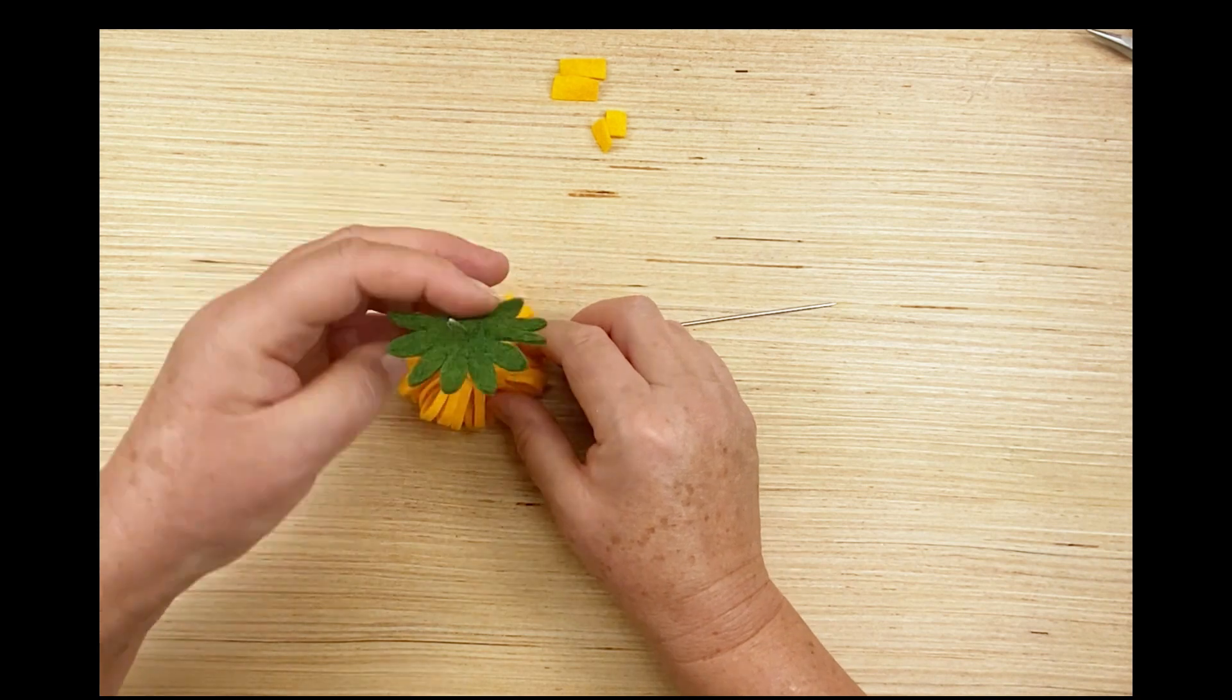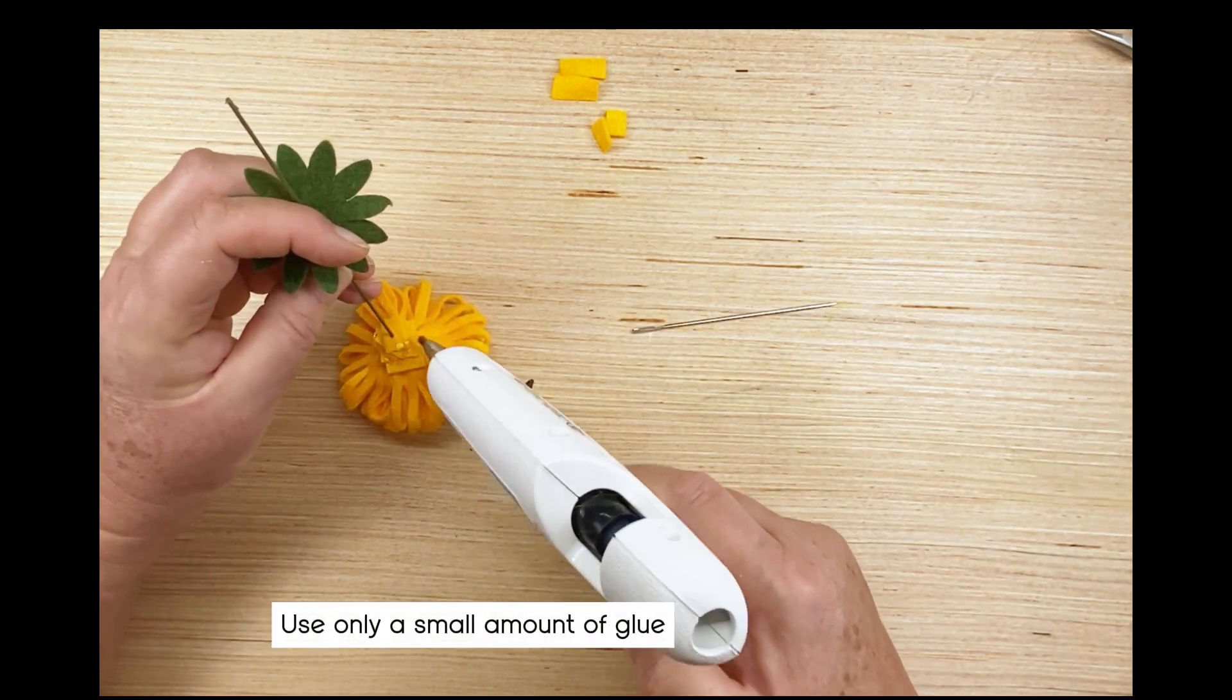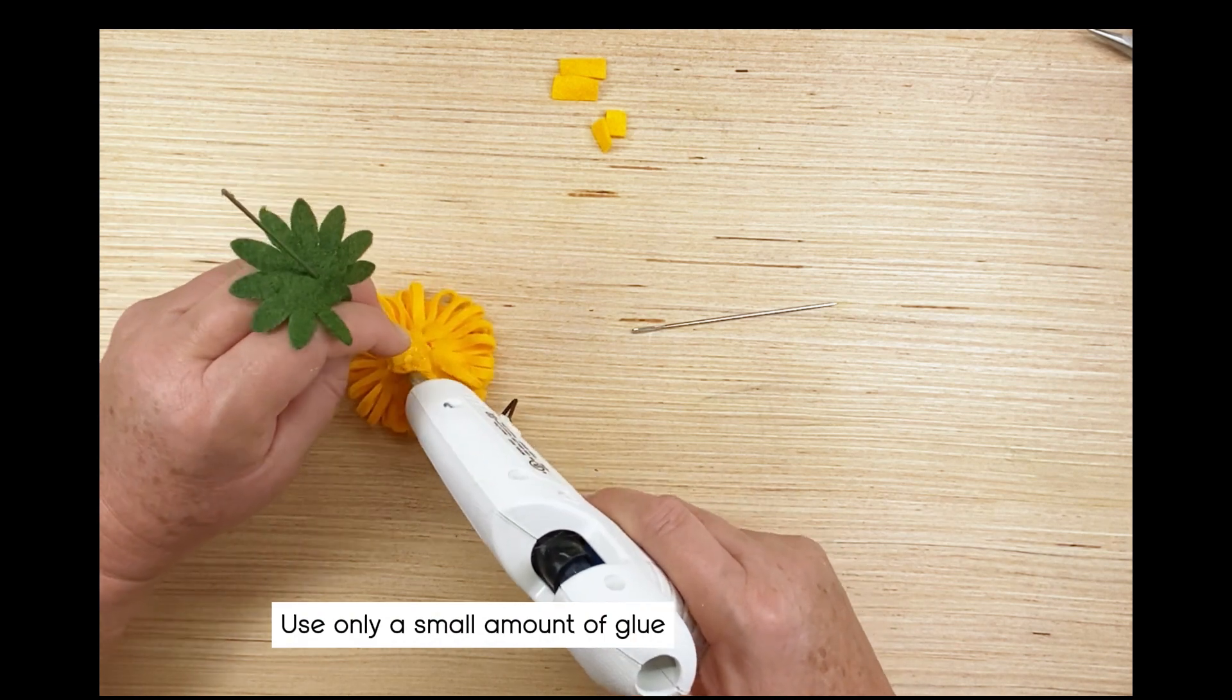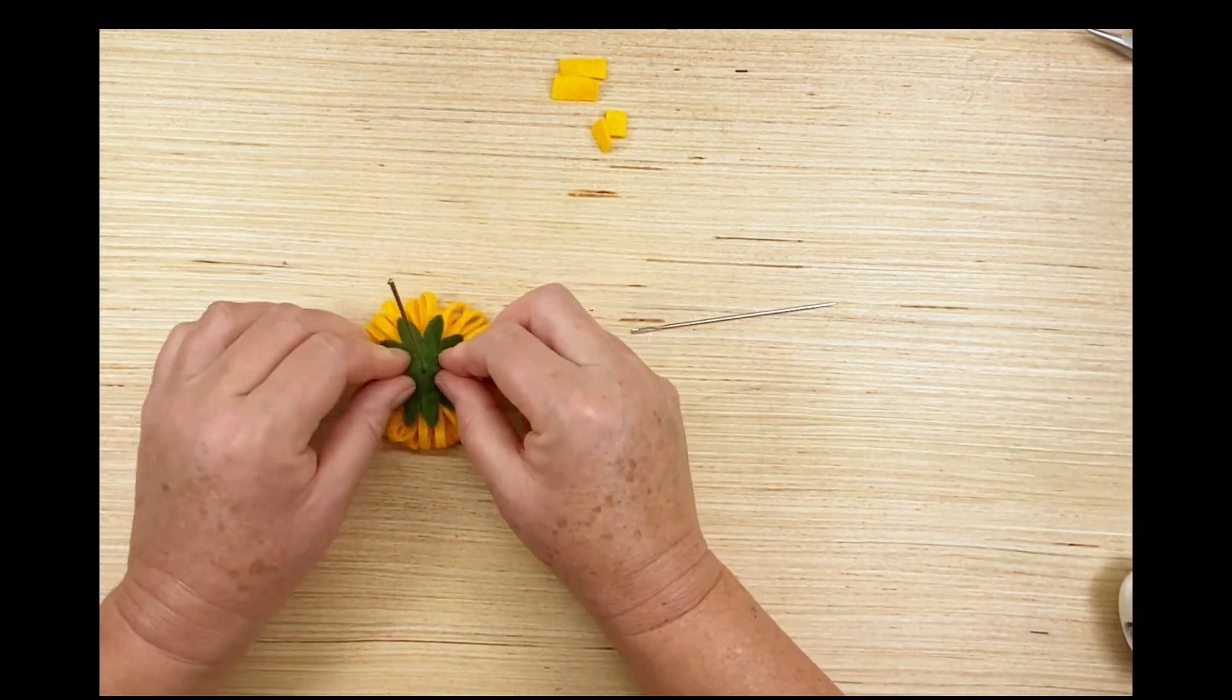Poke a hole through the middle, slide it onto the stem, that's how it's going to sit. Put a bit of glue down there just to hold those pieces of felt in place. Don't use too much glue, we don't want it seeping through the sepal. That's difficult to say.